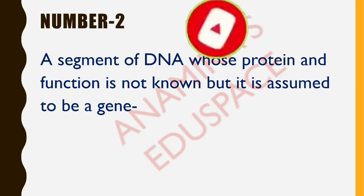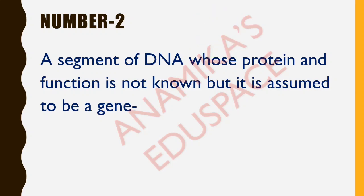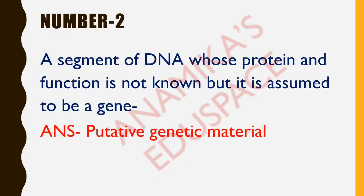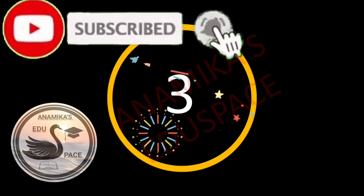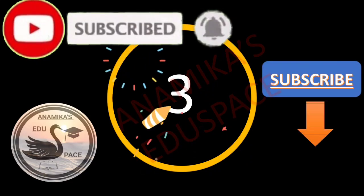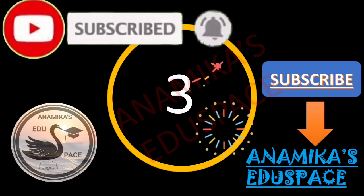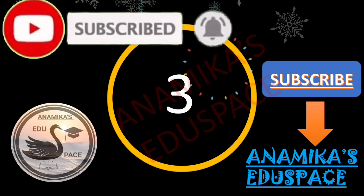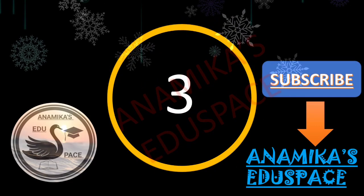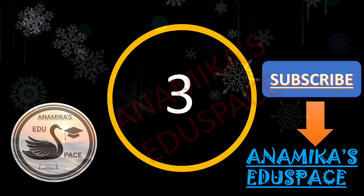Number two: a segment of DNA whose protein and function is not known but is assumed to be a gene — the answer is putative genetic material.